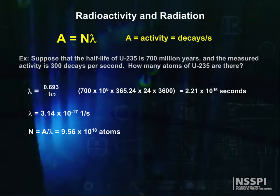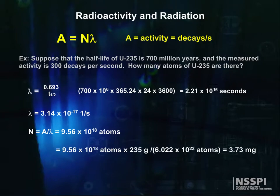Alright, how much does this weigh? Remember your chemistry? 6.022 times 10 to the 23rd atoms of U-235 weighs roughly 235 grams. So we have 3.73 milligrams of U-235.